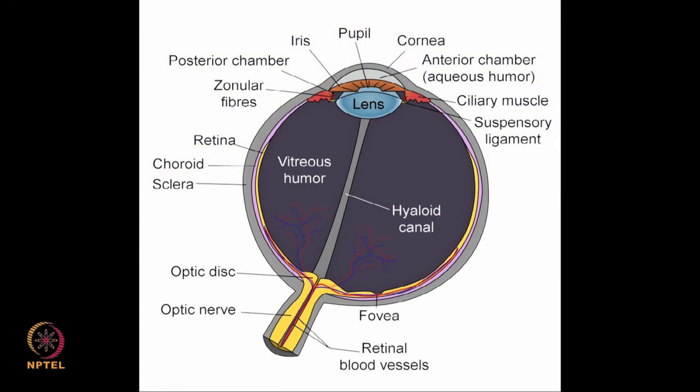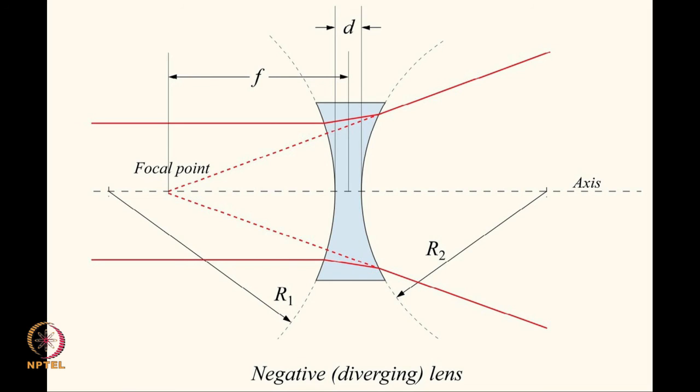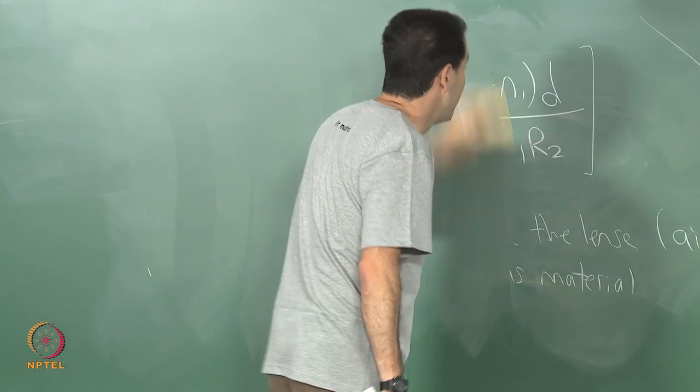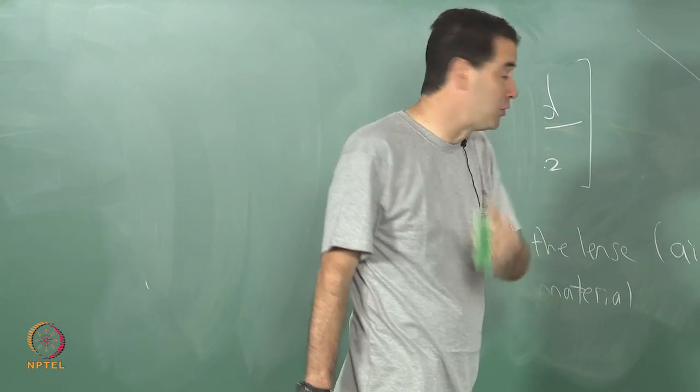I want to now talk about a very useful representation called diopter, which becomes very handy when combining lenses, talking about optical power. Then I'll give an example of it in terms of the human eye. The human eye is going to be important because it is part of the virtual reality system.